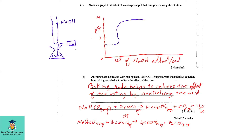Part c: Ant stings can be treated with baking soda (sodium hydrogen carbonate). Baking soda relieves the sting by neutralizing the acid. The equation is: NaHCO₃ + HCOOH → HCOONa + CO₂ + H₂O. Alternatively, CO₂ + H₂O can be written as H₂CO₃ (carbonic acid). This is the end of Module 2, 2007, Number 2.